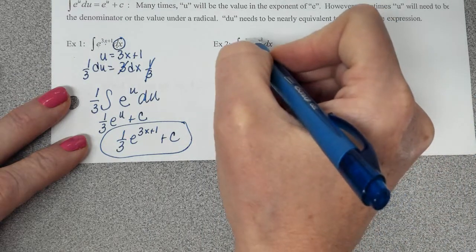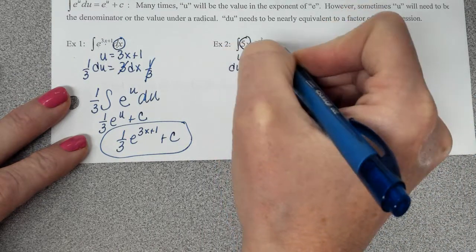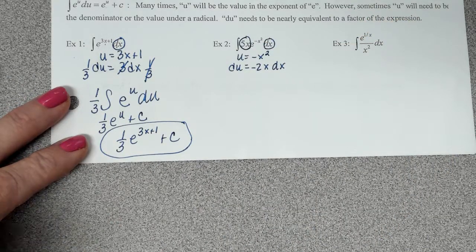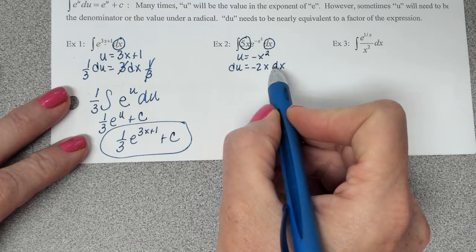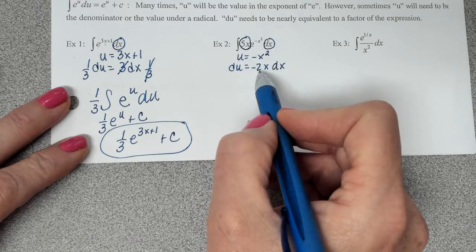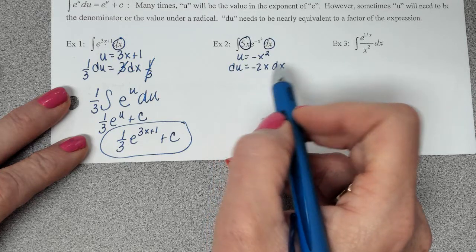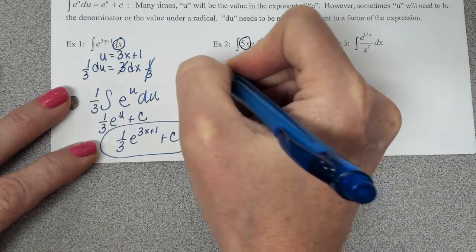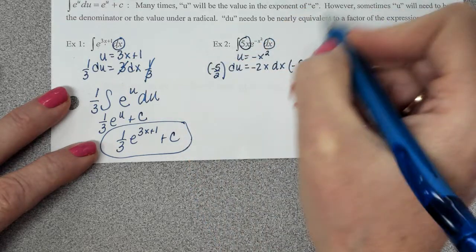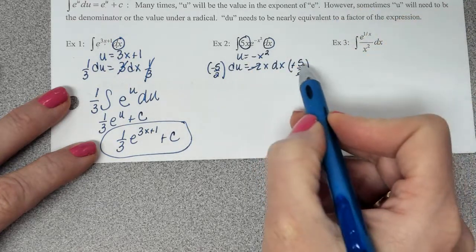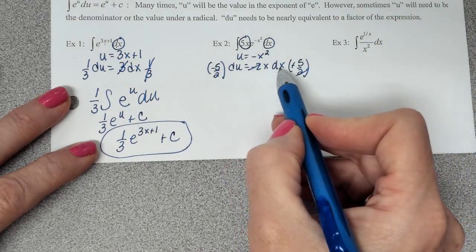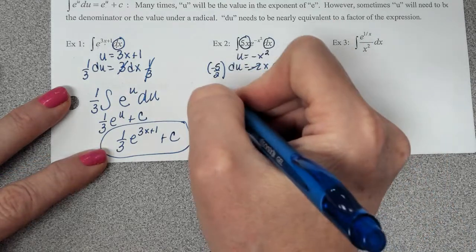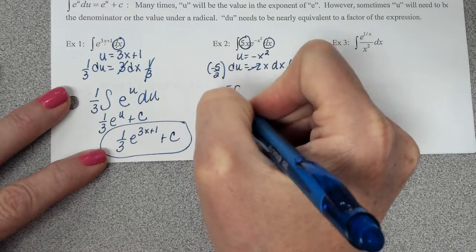Now look at what we're trying to get, though. We're trying to get this factor of 5x dx. That's what we need to replace. So if I got a negative 2x dx and I want to get a 5x dx, I have to get rid of the negative 2 and I have to get the 5. So what's that, Brandon? Right. Multiply both sides by negative 5 halves. So now these would cancel. And I would get that 5x dx that I need.